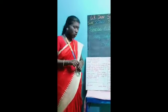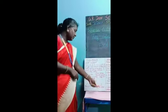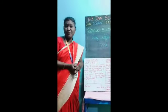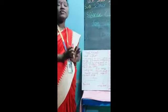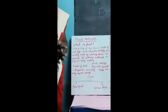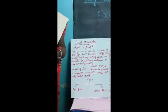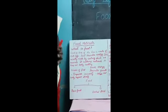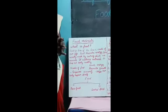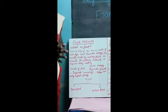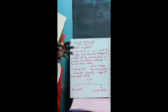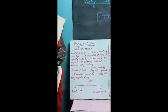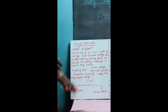So food is classified into two types. One is raw food and the other is cooked food. Raw food means without any cooking process, if you can eat it — that is called raw food. For example, fruits you can eat without cooking, and nuts. These are raw foods — without doing any cooking process, if you can eat it by yourself, that is called raw food.